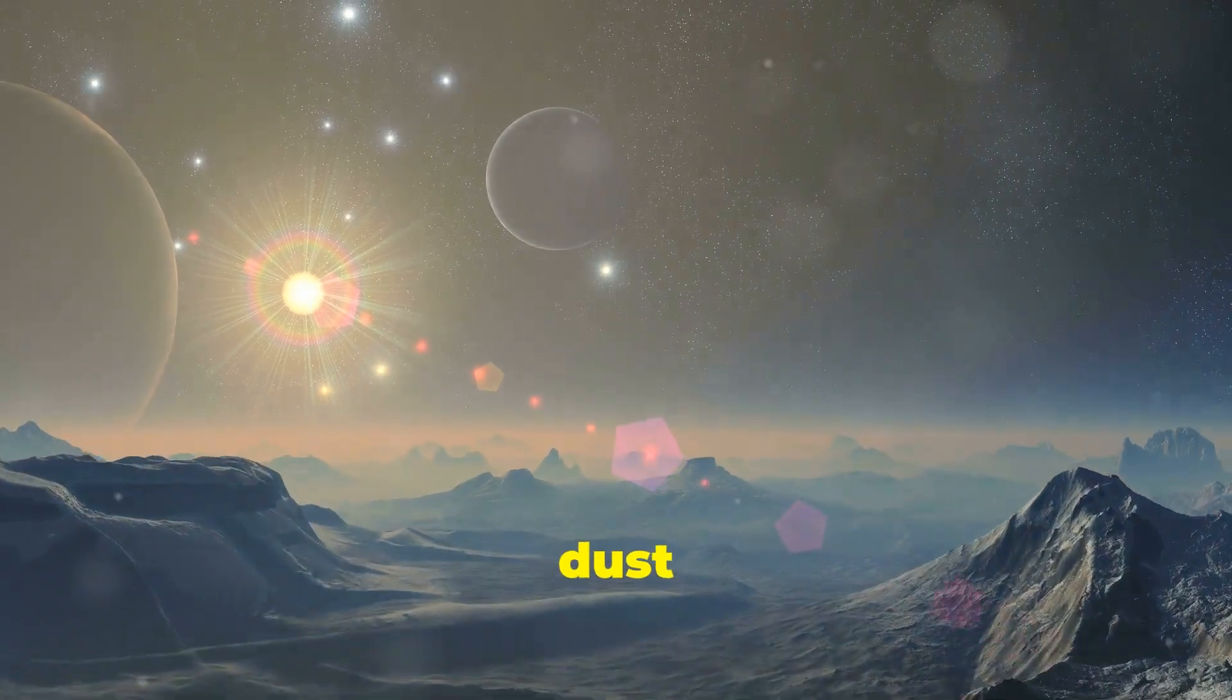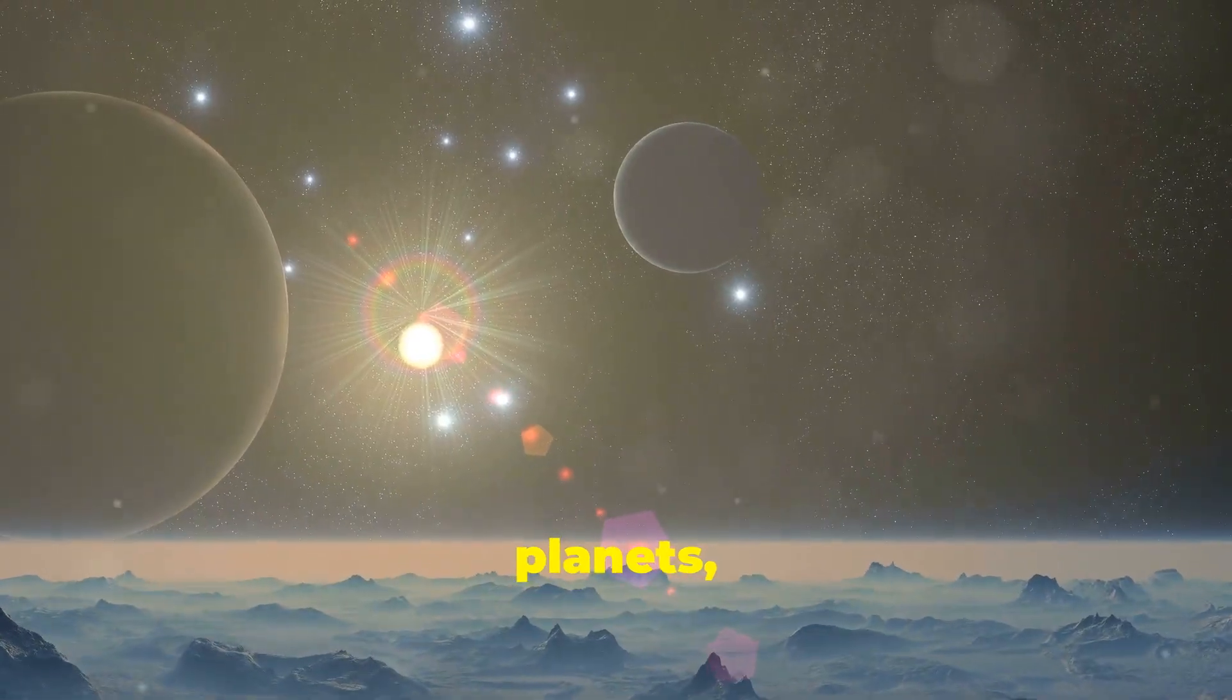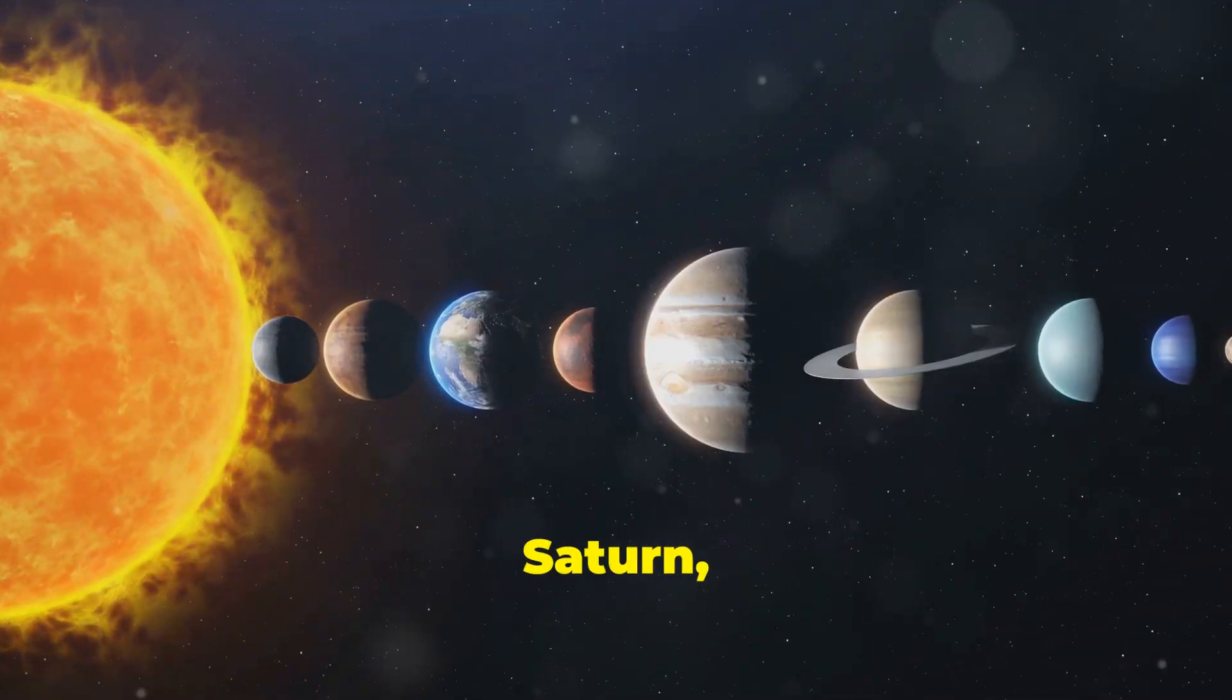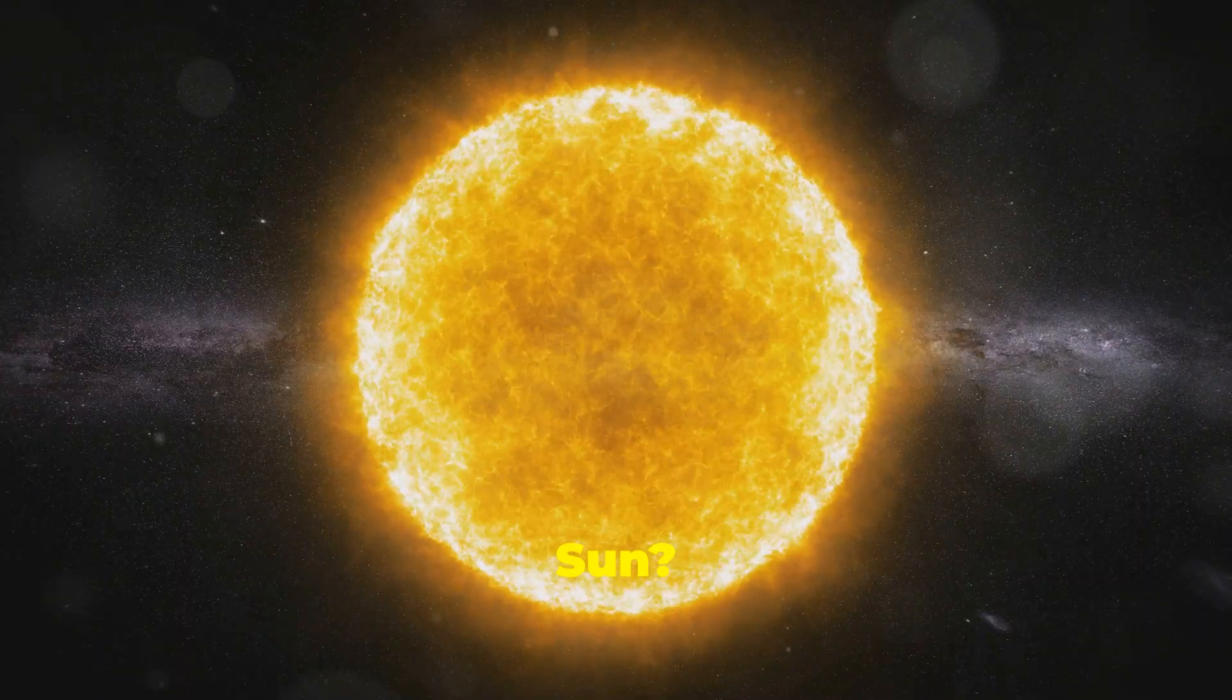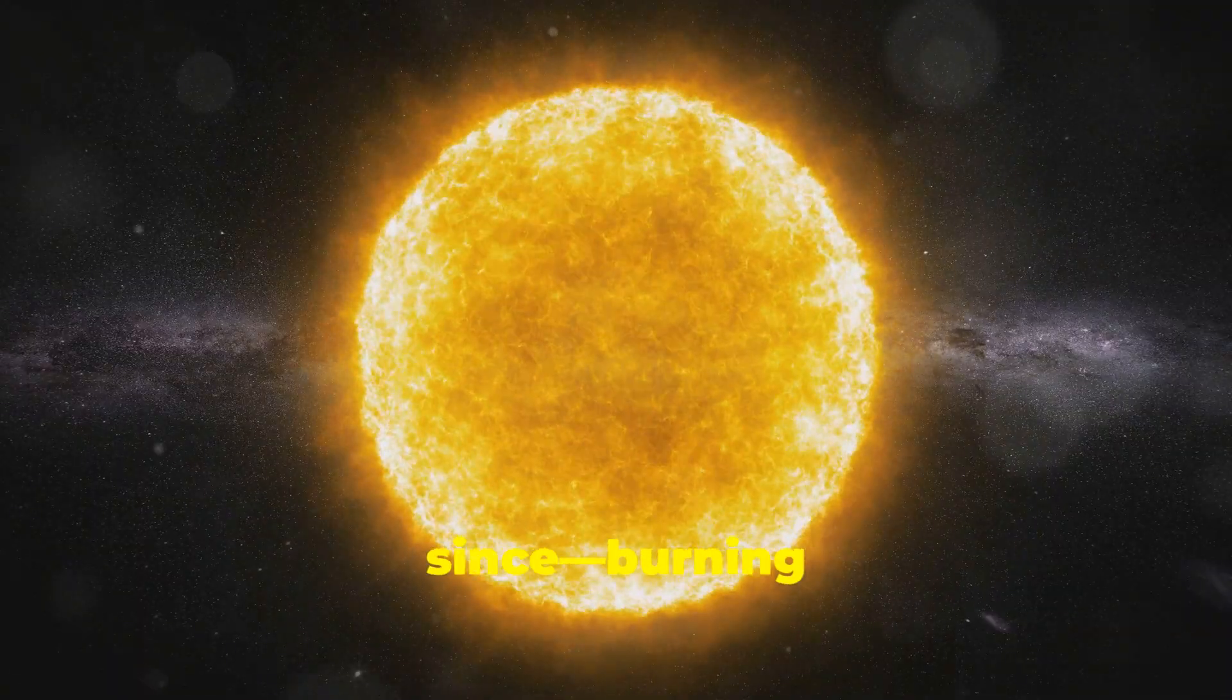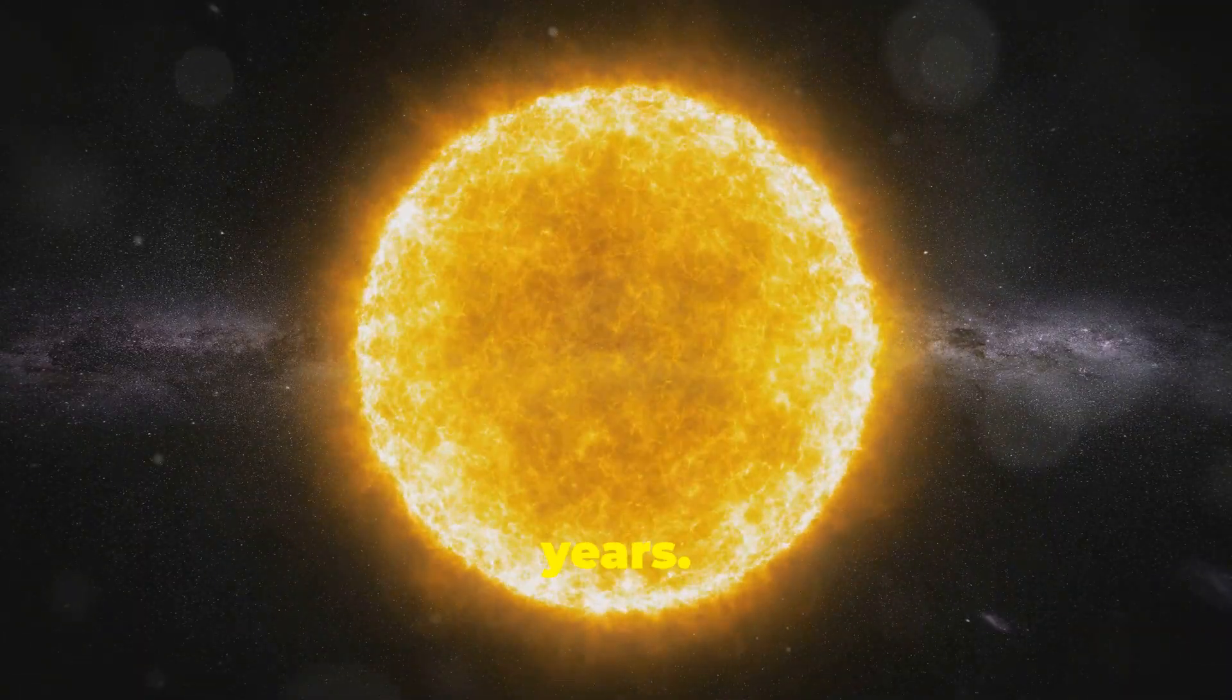But the Sun's story didn't end there. The remaining dust and gas around it began to stick together, forming planetesimals, then planets and eventually our solar system. Jupiter, Saturn, Earth, all formed from the leftovers of the Sun's birth. And the Sun? It settled into a stable phase known as the main sequence, where it's been ever since, burning hydrogen into helium for the last 4.6 billion years.